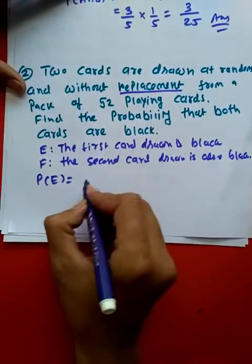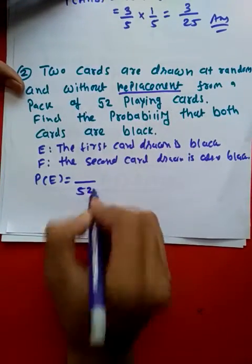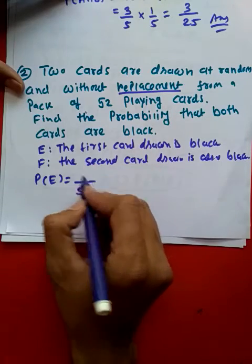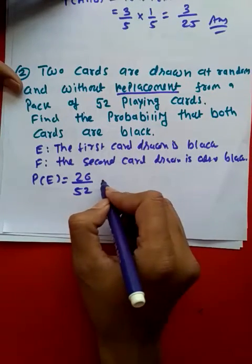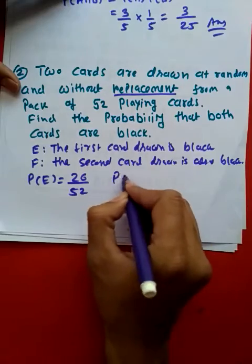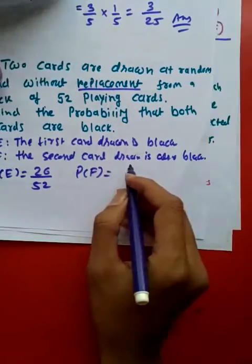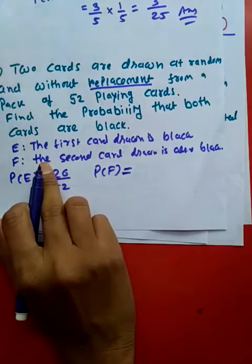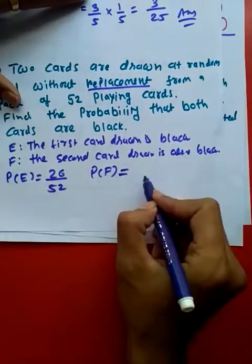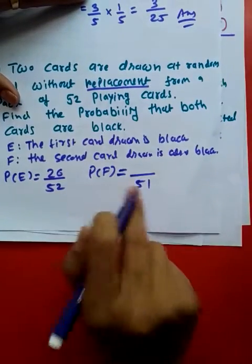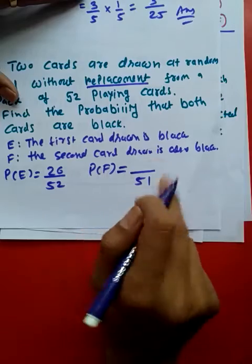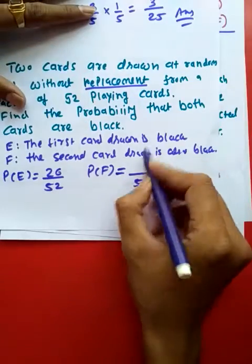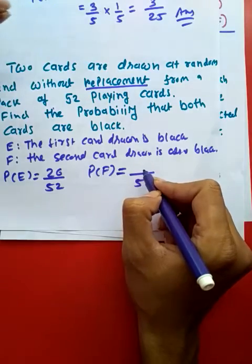Find the probability that both cards are black. So P(E): we have 52 cards and out of them the number of black cards are 26. P(F) can be given as, after drawing the first card without replacement, the number of available cards are 51, and out of them the first card was black, so 25 black cards remain out of 26, giving us 25/51.